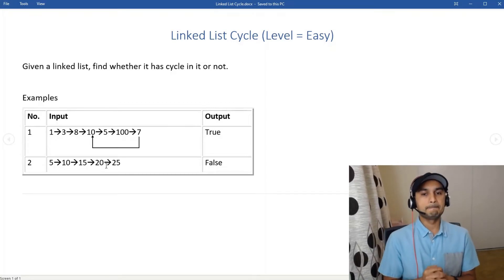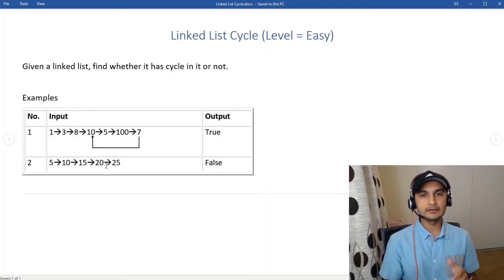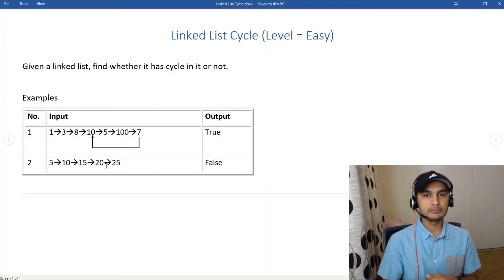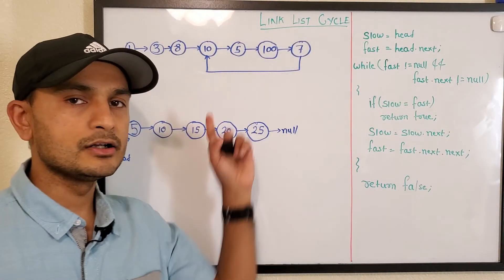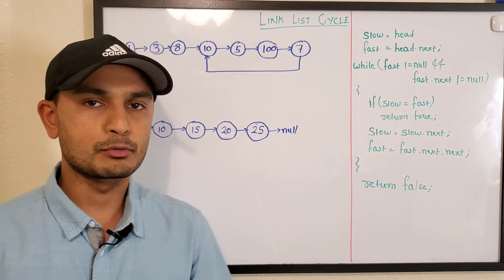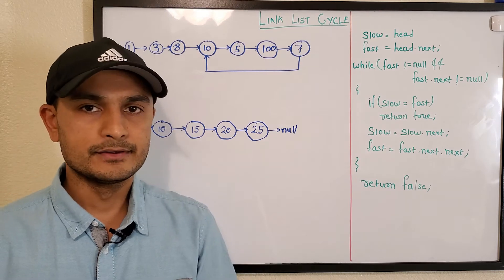So that's our problem. Let's head to the whiteboard to understand the approach and algorithm, then we'll come back and run our code. These are our two examples that we just discussed. Let's first understand why this problem is important.